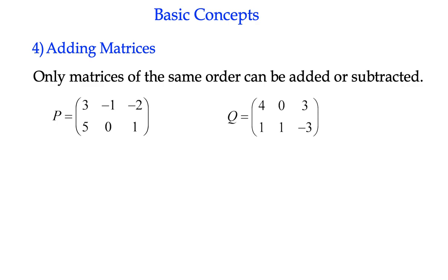Basic arithmetic, adding matrices. We can add matrices only if their order is the same. In other words, they have to have a matching element in each position. In this case here, matrix P is a 2 by 3 matrix, and matrix Q is a 2 by 3 matrix, so we can add them together.